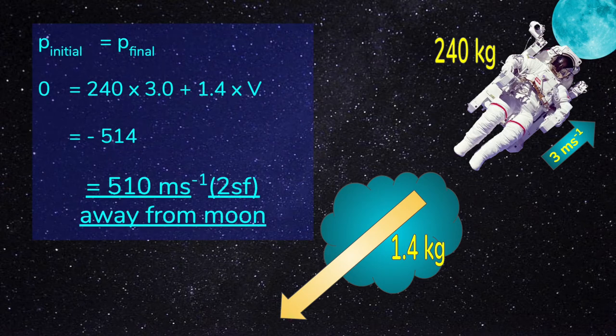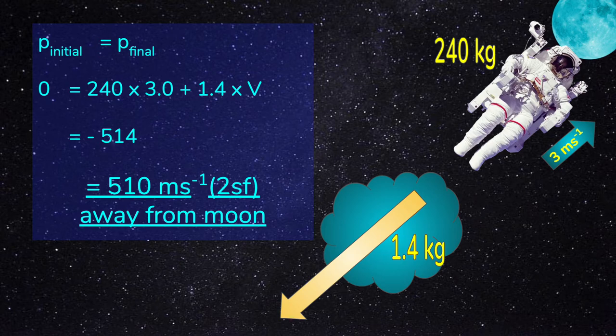It can be treated as an isolated system, so that we know that momentum before the explosion is the same as that afterwards. And since the astronaut was not moving, his initial momentum is 0. Afterwards, both objects are moving in opposite directions.